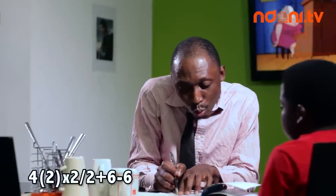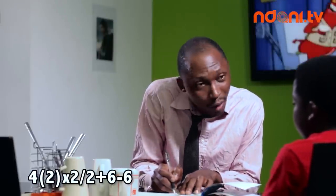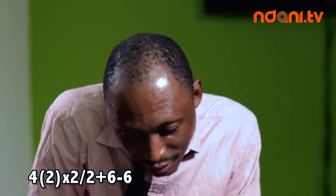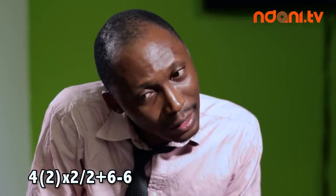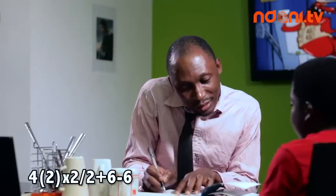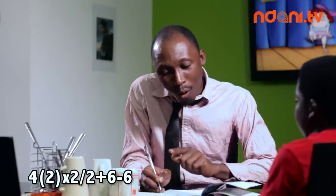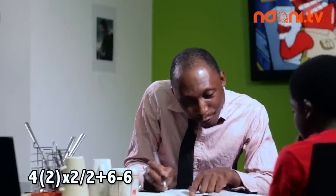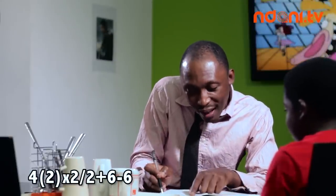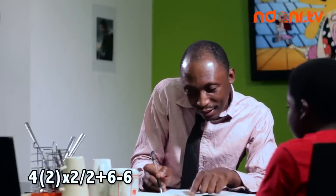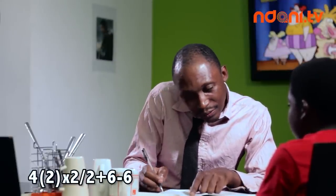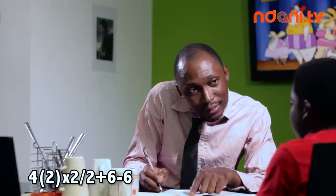Times two — that's two. Divide by two — that's one. Then plus six — seven. Minus six — that's one again. Then you come back here. Four into brackets. So you already have your one. Then you don't forget your four. I think you understand me.